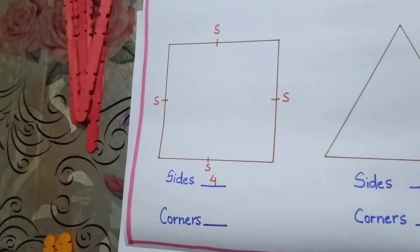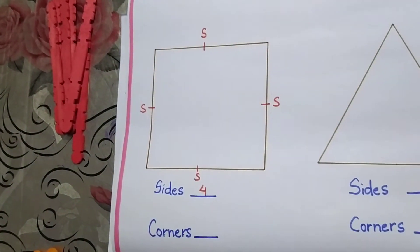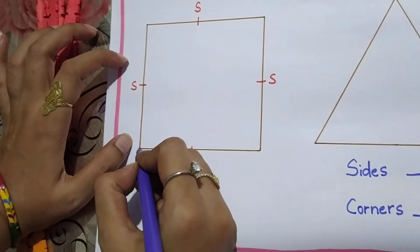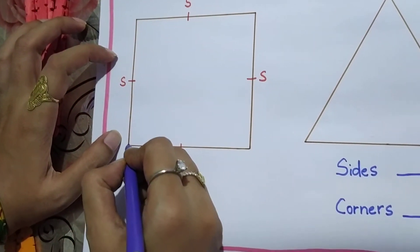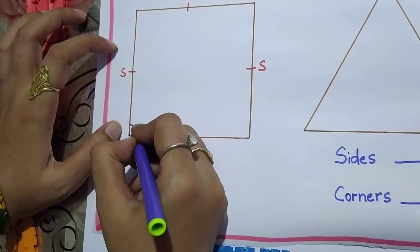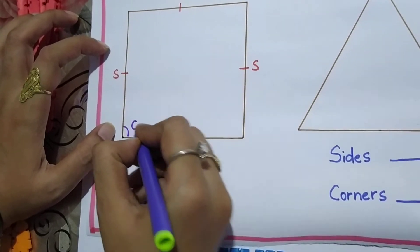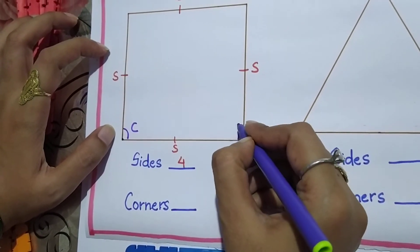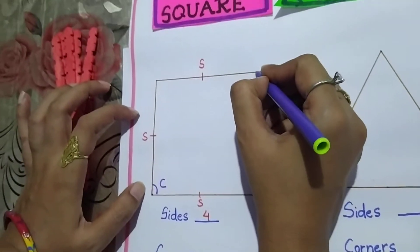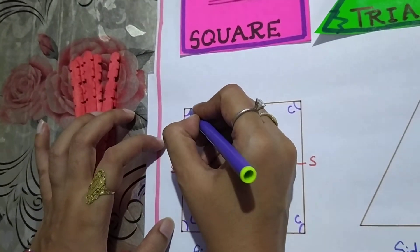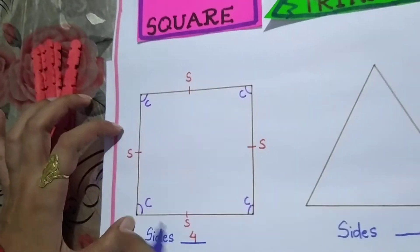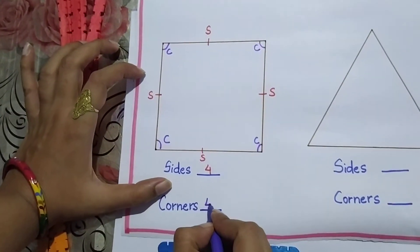And if we talk about number of corners, then we will denote the corners from C. So how many corners are there? Look at this one, here, this one and this one. One, two, three and four. So how many corners are there in a square? It is four.